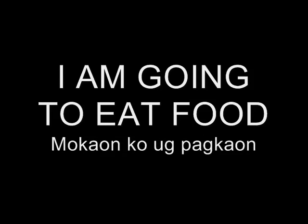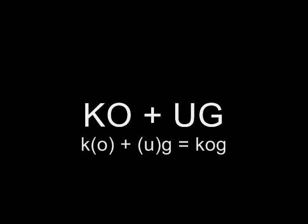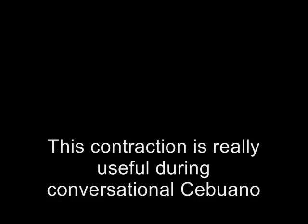There's one thing you can do here. Since 'ko' ends with a vowel and 'og' begins with a vowel, you can drop the vowel from 'og' and attach it to the end of 'ko' to make one word: 'kog'. So 'mukaon ko og pagkaon' becomes 'mukaon kog pagkaon', which sounds a lot smoother. You can do this as long as the preceding word ends in a vowel — 'og' will always start with a vowel, so you're allowed to contract them.